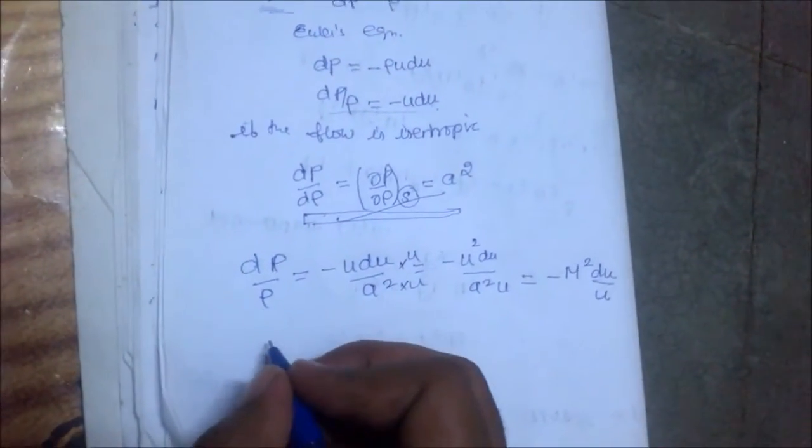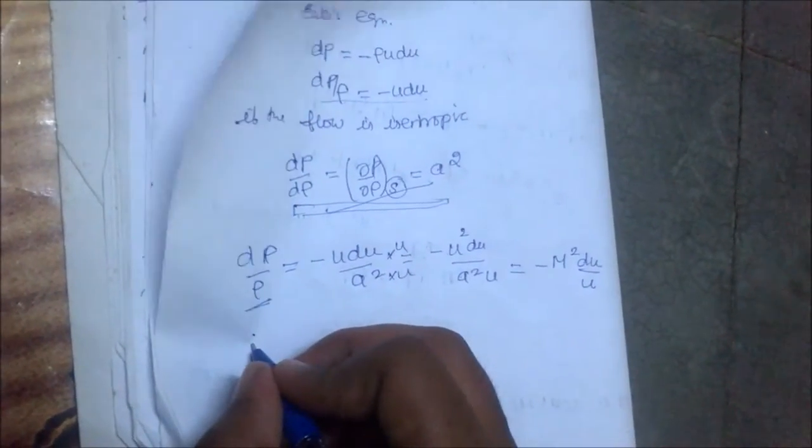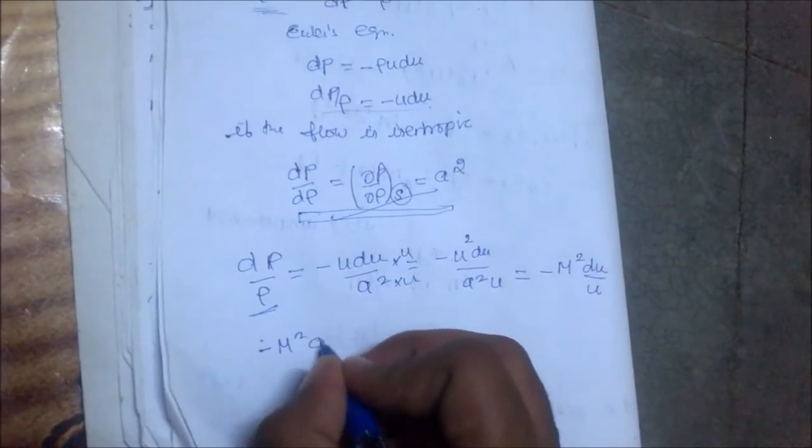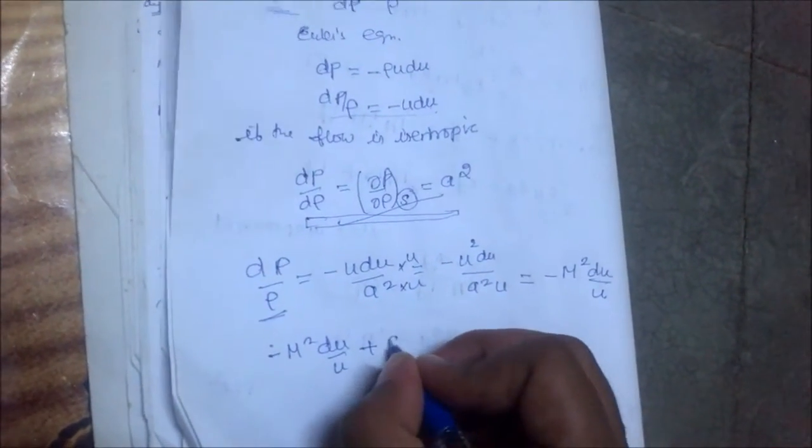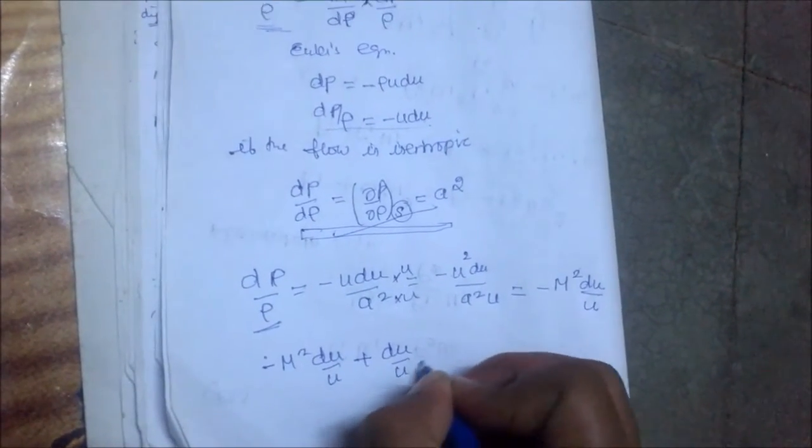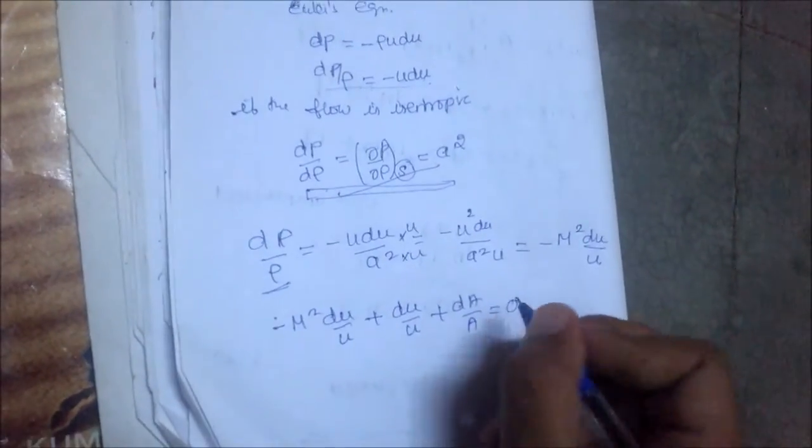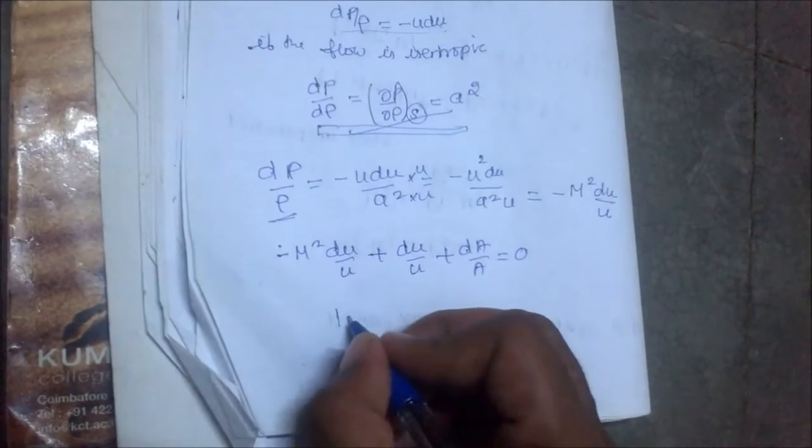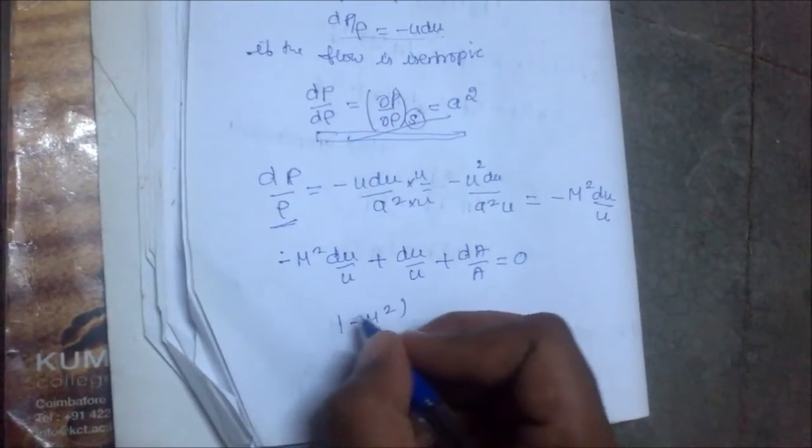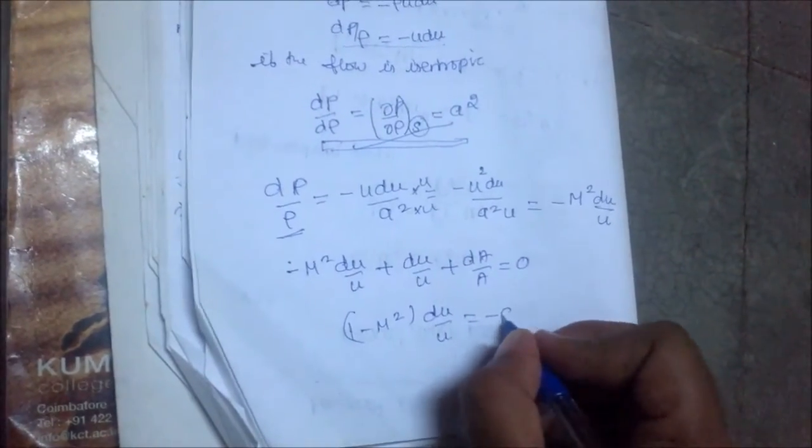Substituting into the differential form, we get -M^2*du/u + du/u + da/a = 0, which simplifies to (1 - M^2)*du/u = -da/a. This is the area-velocity relation.